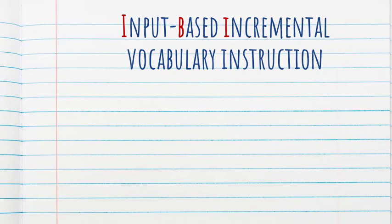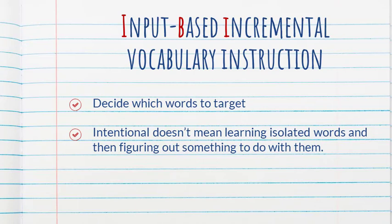I'm going to simplify, summarize, and synthesize the 10 principles so that you can get the gist of it. The first principle is about being intentional in how we teach vocabulary and what words we target. We need to decide which words to target based on the communicative tasks that we want students to be able to accomplish. What I like about this approach is that it makes clear that intentional vocabulary learning doesn't mean learning isolated words and then figuring out something to do with them. The words are still subservient to communication, and we are presenting and using them in context, so there's still a lot of room for incidental learning.